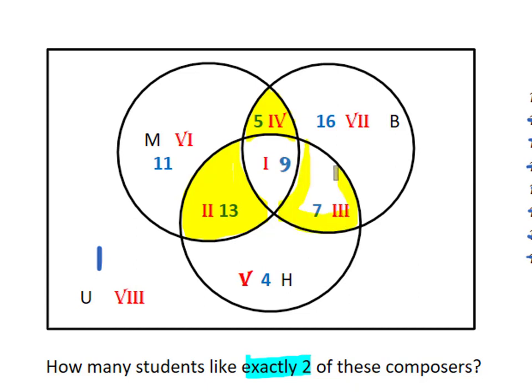And then here, we have all the students who are in the B set and the H set, but not the M set, so they like Haydn and Beethoven, but not Mozart. So it's these three specific regions that like exactly two of the composers.